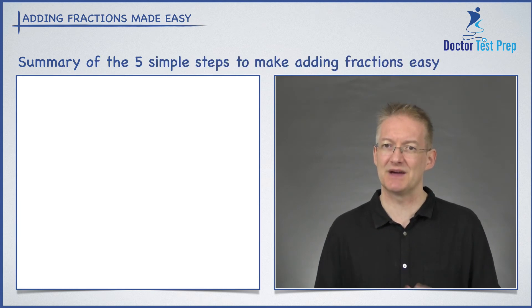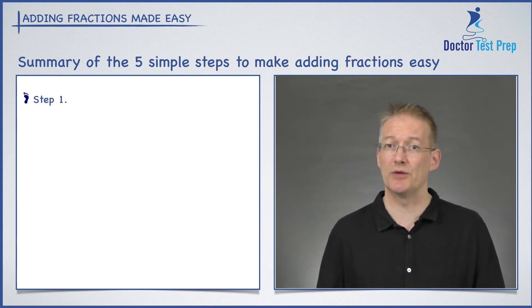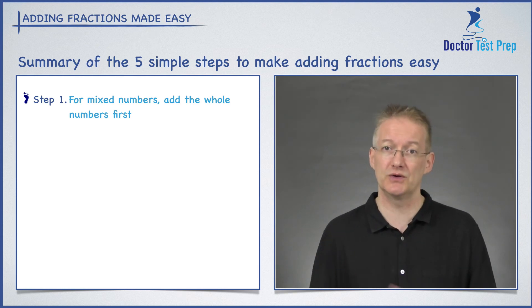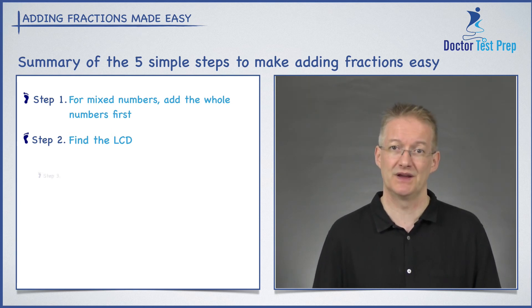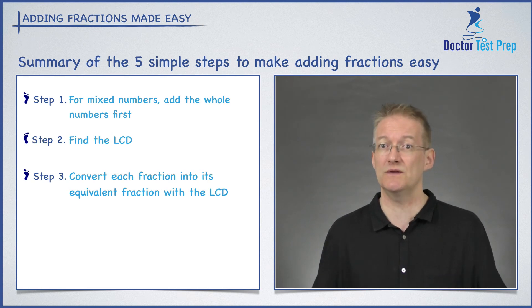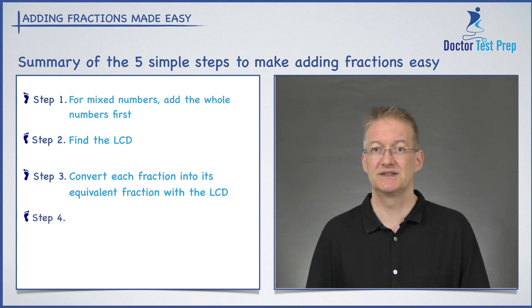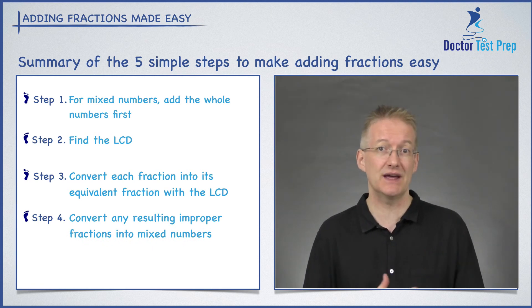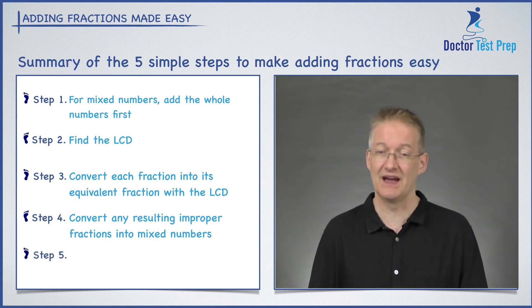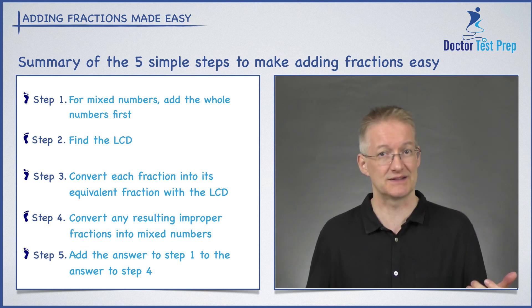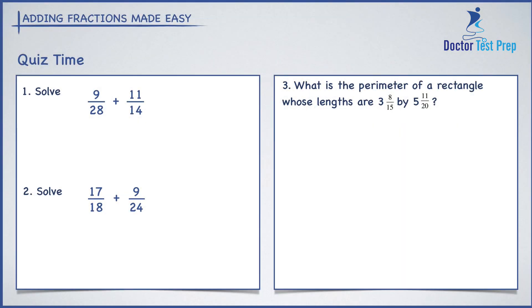Let's summarise the five steps that make adding fractions really easy. Step 1: if adding mixed numbers, add the whole numbers first. Step 2: find the LCD, the lowest common denominator. Step 3: convert each fraction into its equivalent fraction using the LCD. Step 4: add the fractions together, and if you get any improper fractions, convert them into mixed numbers. Step 5: add the answer to step 1 to the answer to step 4. And there you have it — quiz time! Let's see if we can apply these five steps to the three questions here. Pause the video and I'll go through the answers in just a few moments. Good luck.